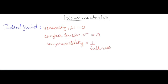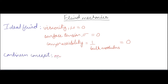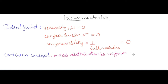Let's start with ideal fluid. A fluid is anything that flows — whether it's a gas or liquid, if it flows it's a fluid. An ideal fluid has viscosity equal to zero, surface tension equal to zero, and is incompressible — meaning compressibility is zero. Since compressibility is 1 divided by bulk modulus, if compressibility is zero then bulk modulus is infinity.